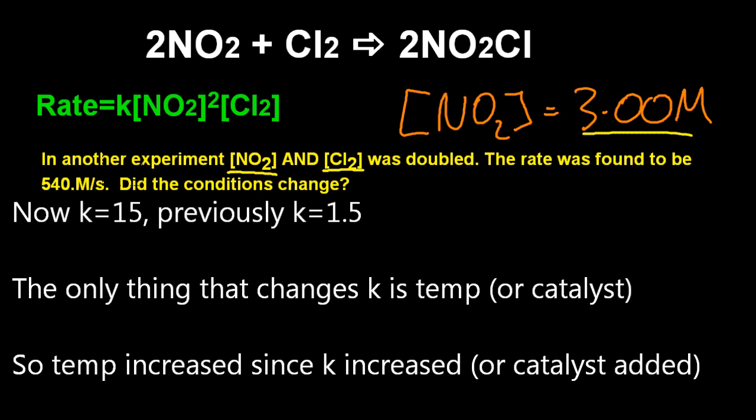As you remember, the only thing that changes the rate constant is temperature or a catalyst, and that's not really IB. So that must mean the temperature's changed. Now how did it change? Up or down? Well, the rate constant's increased, so that makes sense to say the temperature's increased, doesn't it? It's a faster reaction. And how does temperature increase rate? More collisions per unit time and higher energy collisions. And we're done.